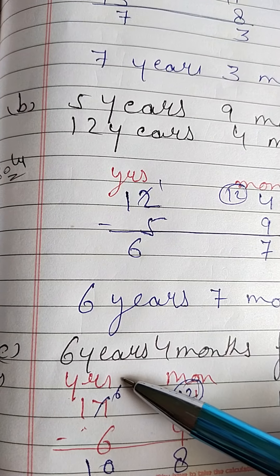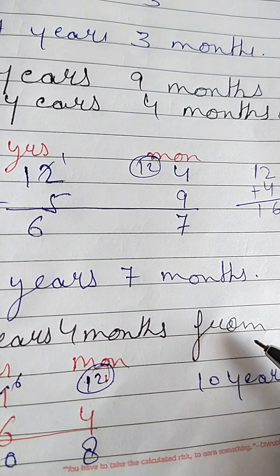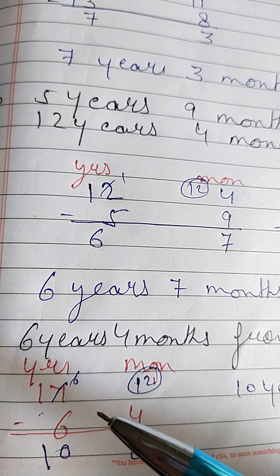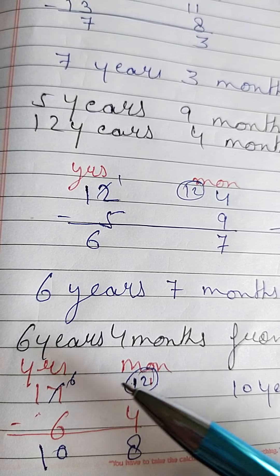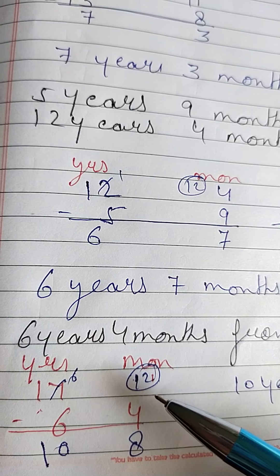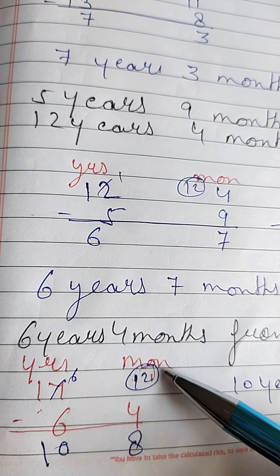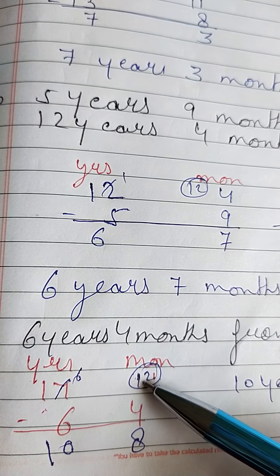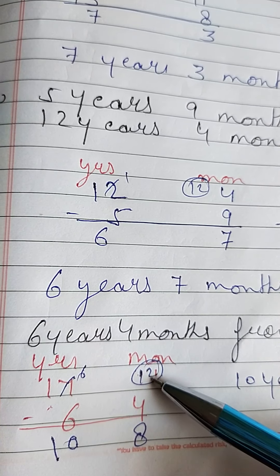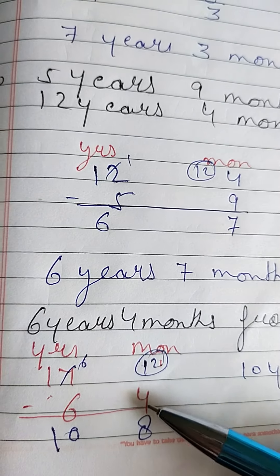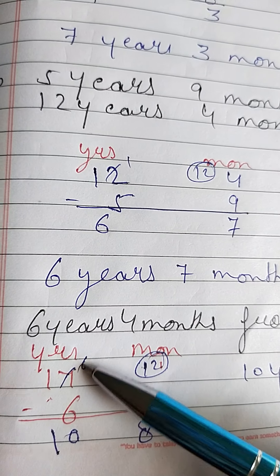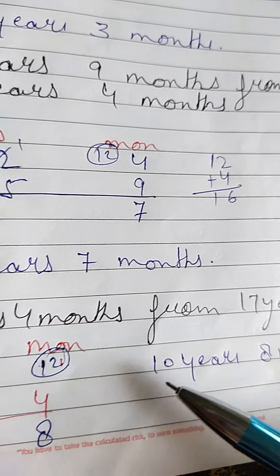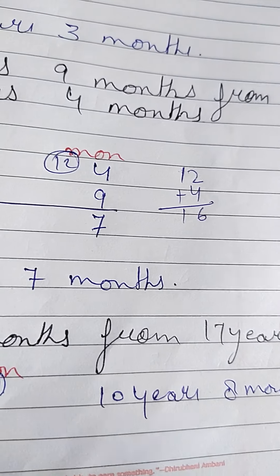Now question number C: subtract 6 years 4 months from 17 years. Since 17 years has no months, give a carry of 1 year as 12 months. 12 minus 4 gives 8 months. Then 16 minus 6 gives 10 years. So your answer is 10 years and 8 months.